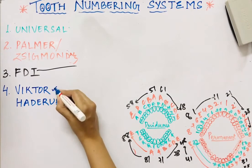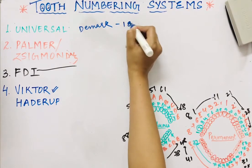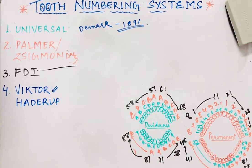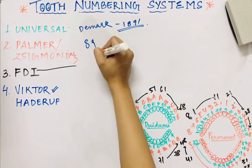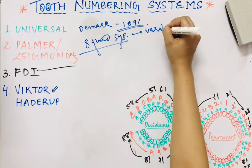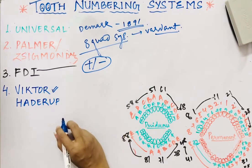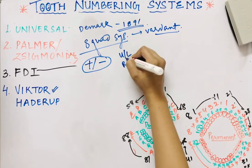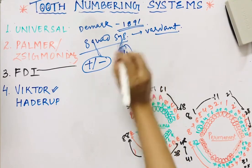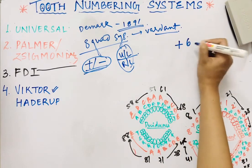The next system was given by Victor Haderup of Denmark in the year 1891. This system is a variant of the eight-quadrant system. In this system, plus and minus symbols are used — plus to denote upper and minus to denote lower — to differentiate between upper and lower arches, and the position of the number (left or right of the sign) differentiates between left and right sides.